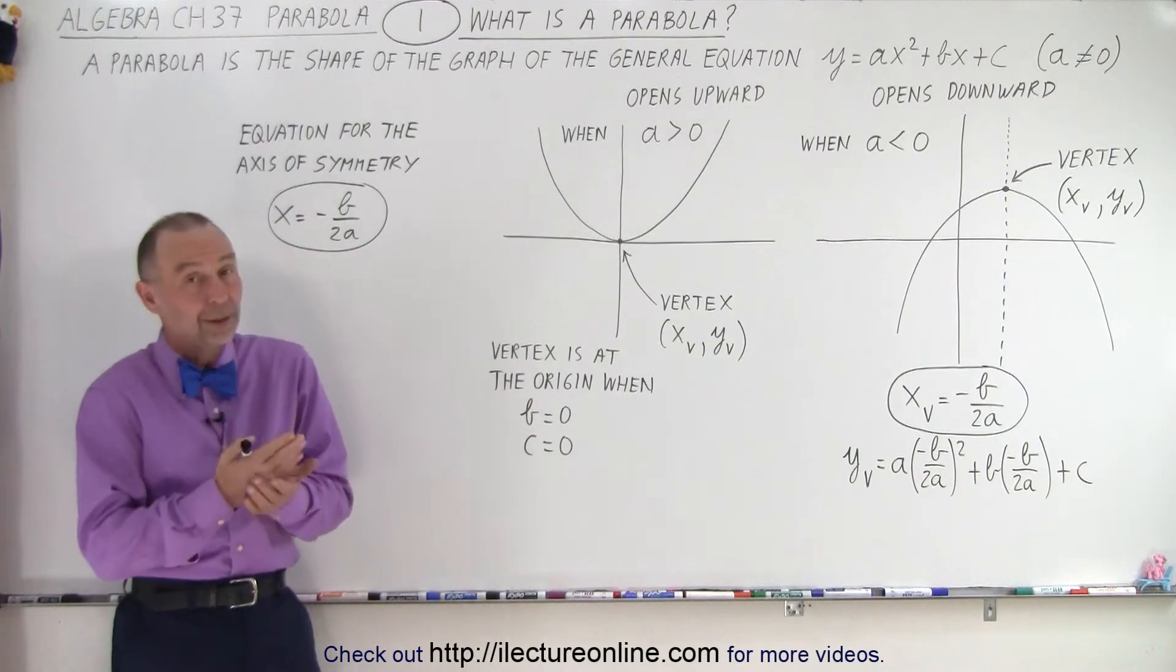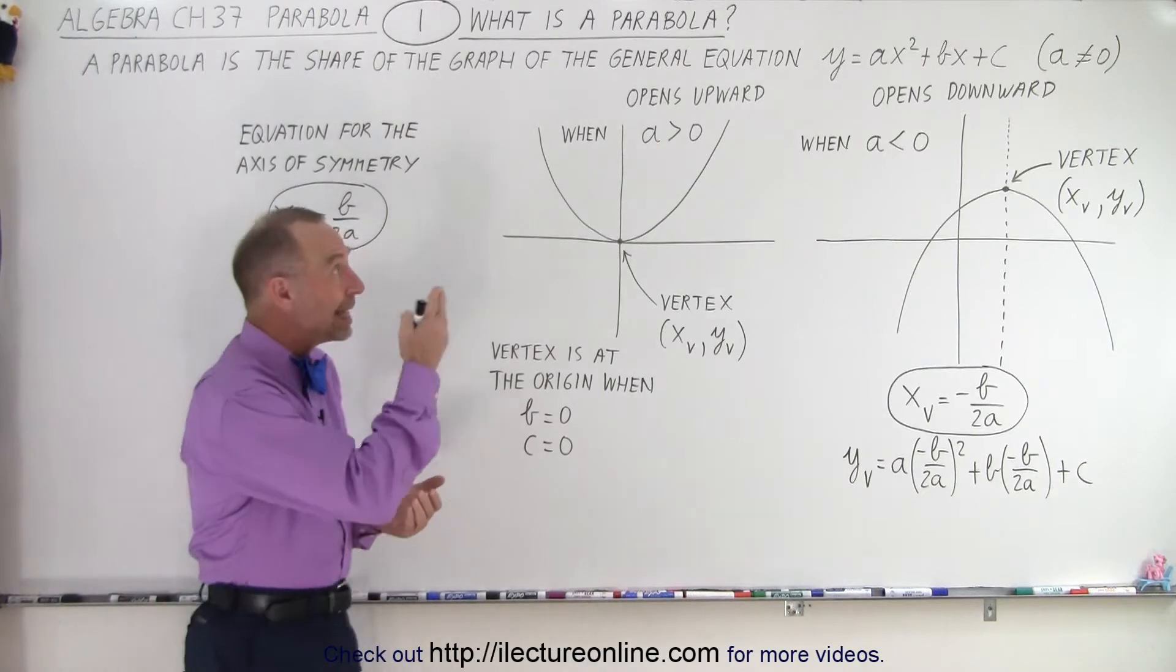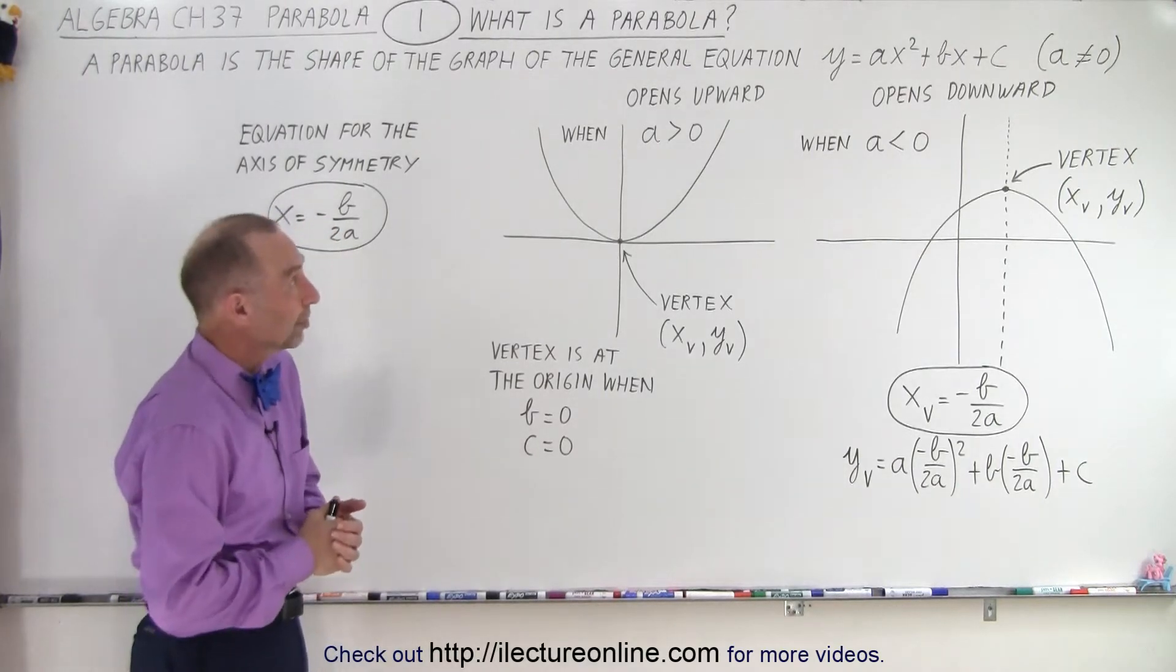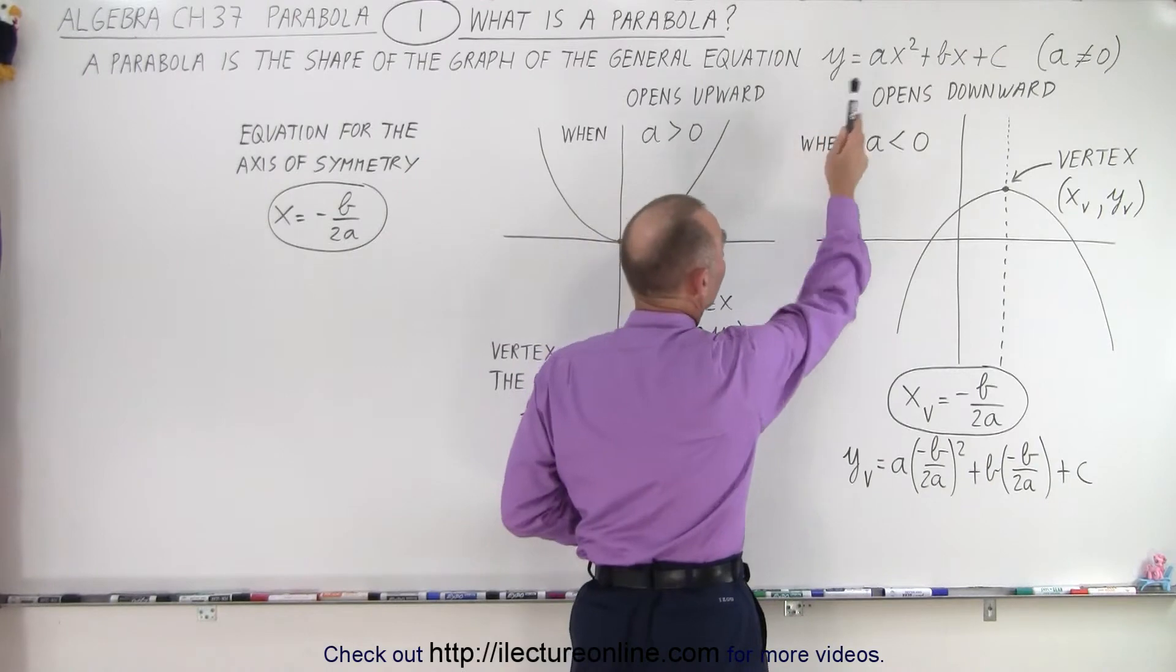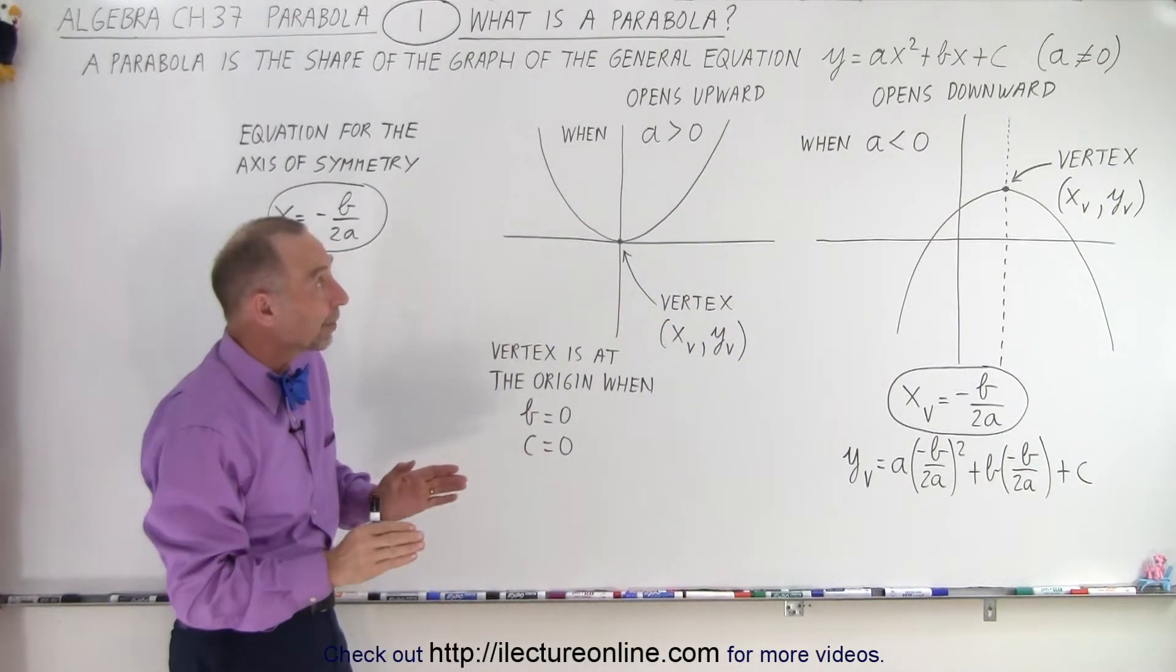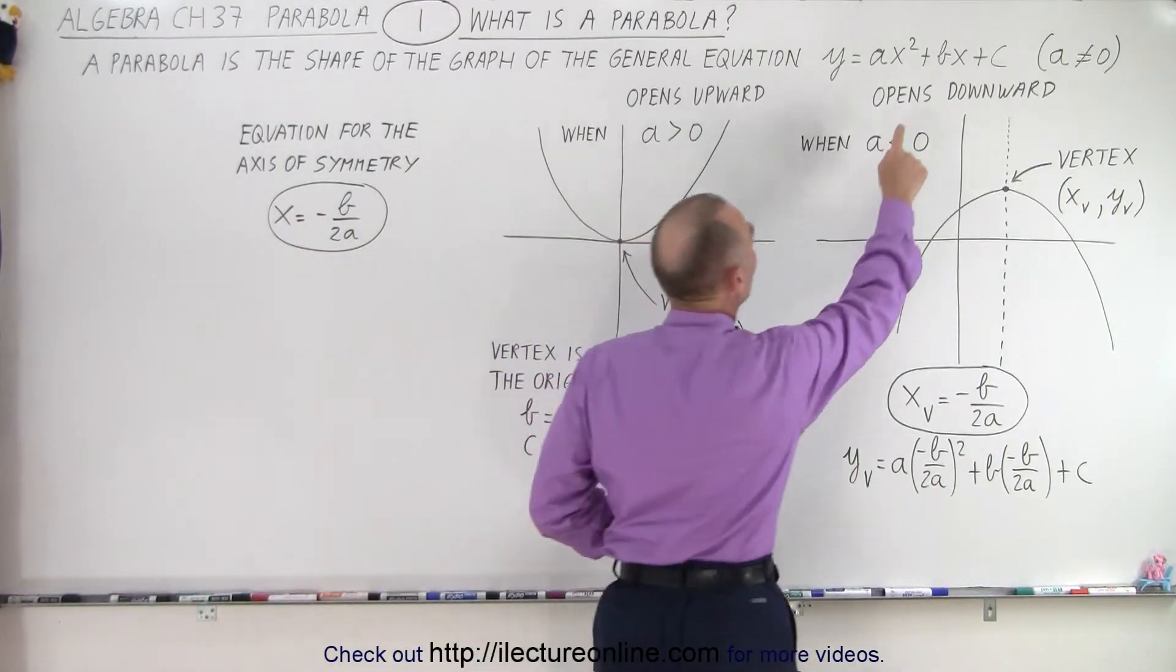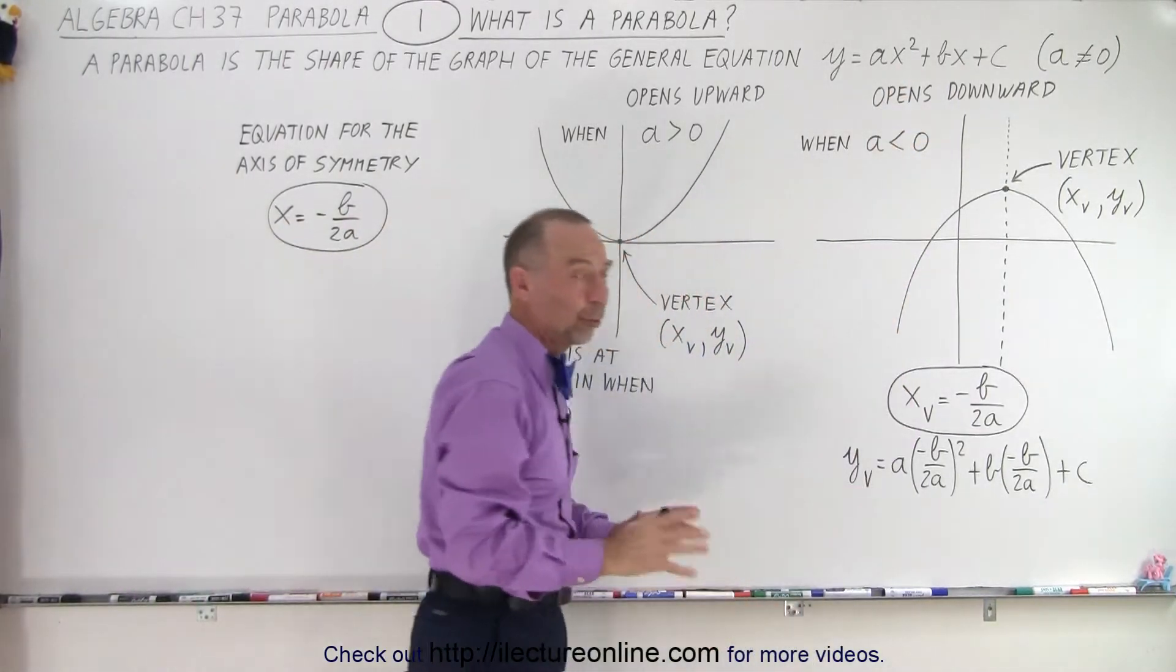Well, by definition, the parabola is the graph that you get when you draw the quadratic equation. The general form of the quadratic equation is y equals ax squared plus bx plus c, and the only requirement there is that a cannot be zero. You cannot have a quadratic equation if you don't have the x squared term.